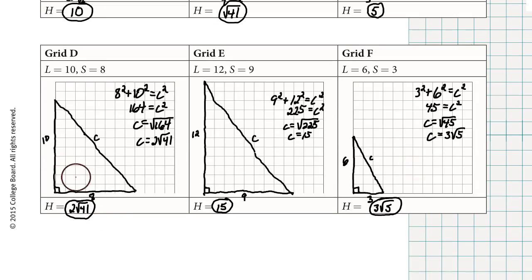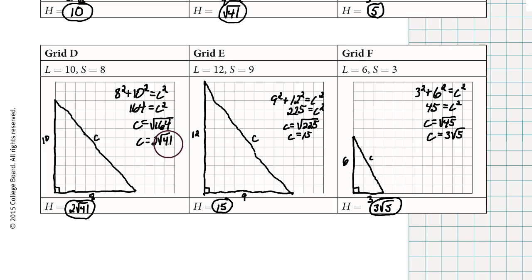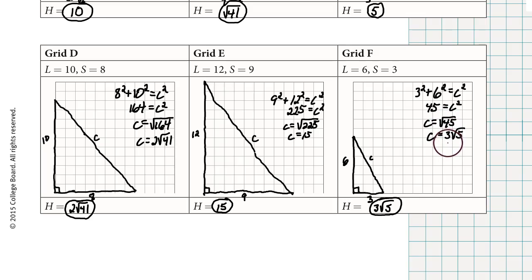In grid D, we have a triangle that's 8 across the bottom and 10 tall. The Pythagorean theorem gives C as the square root of 164. Since 164 equals 4 times 41, the answer is rewritten as C equals 2 times the square root of 41. For grid E, C is the square root of 225, which is 15. For grid F, C equals the square root of 45, which equals the square root of 9 times 5, and can be written as 3 square root of 5.